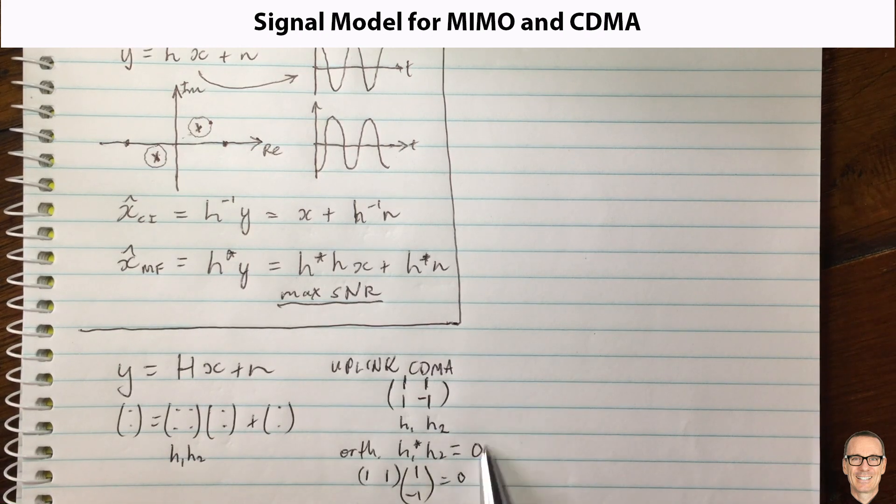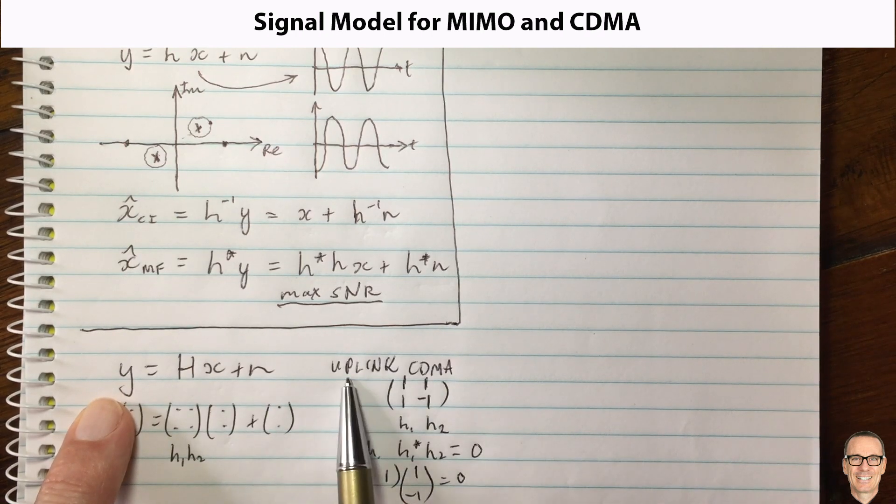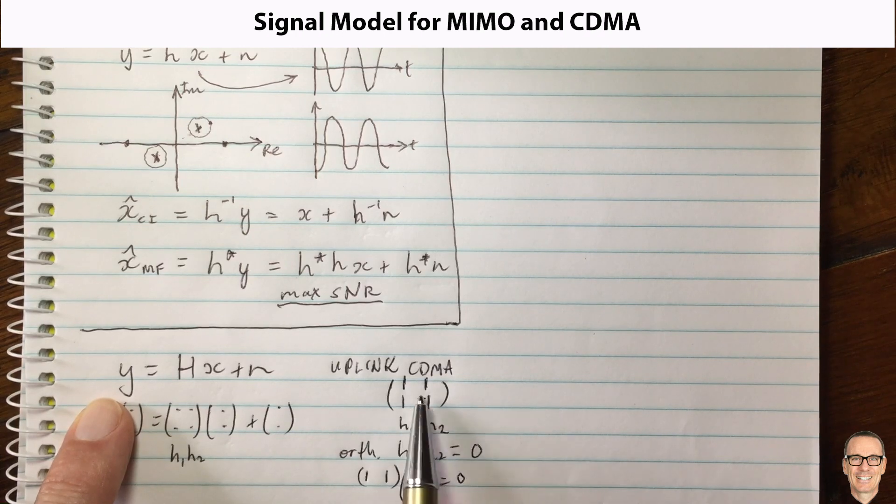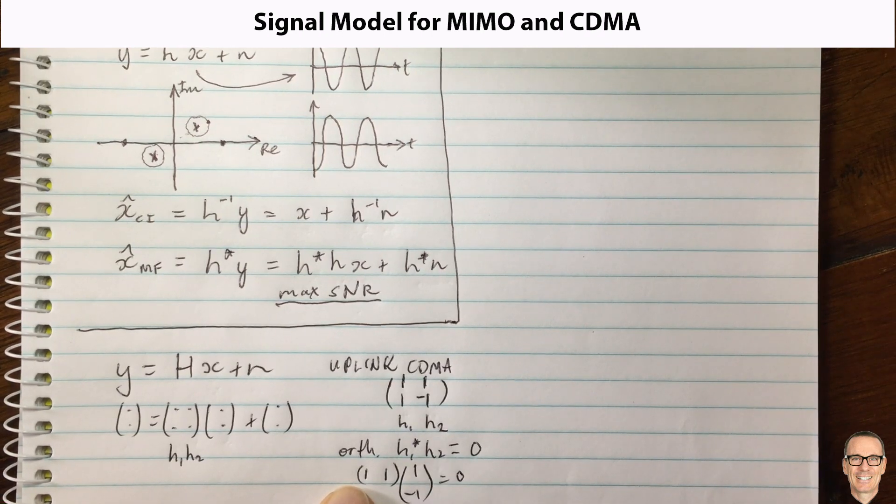So I'll just give this little example here to put into your minds what we're talking about when we have this matrix equation. Now in the uplink CDMA case, it could be two different users in the uplink with their own spreading codes. If they're orthogonal then you have this property here, but they're not always going to be orthogonal.